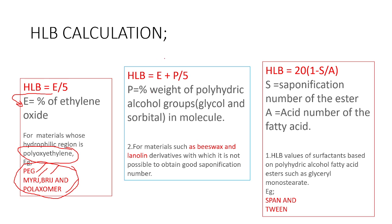The next formula is HLB = (E + P) divided by 5, where E is the percentage of ethylene oxide and P is the percentage weight of polyhydric alcohol groups. This formula is used for materials like beeswax and lanolin.